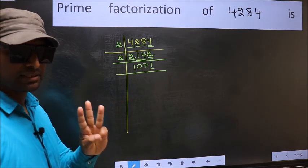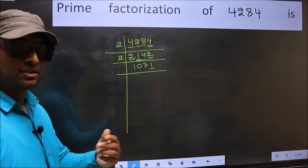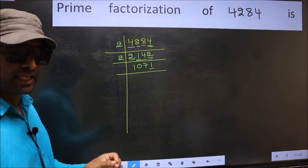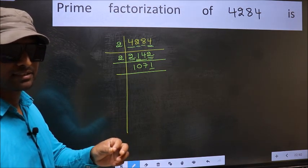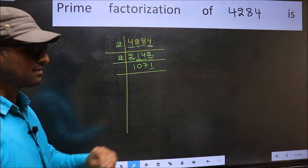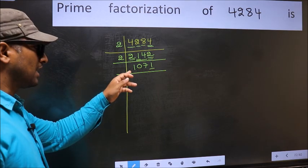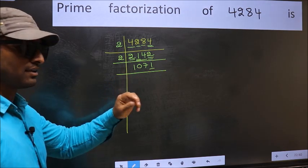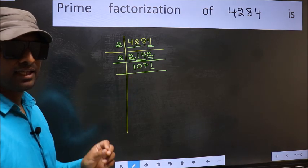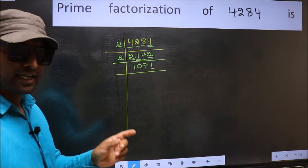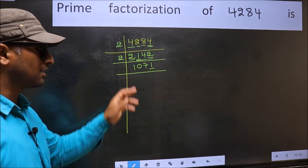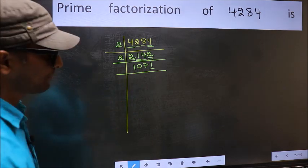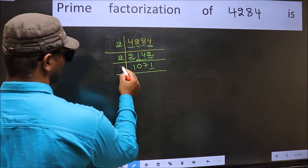Next, prime number 3. To check divisibility by 3, we should add the digits: 1 plus 0 plus 7 plus 1 equals 9. And 9 is divisible by 3, so this number is also divisible by 3. So take 3 here.